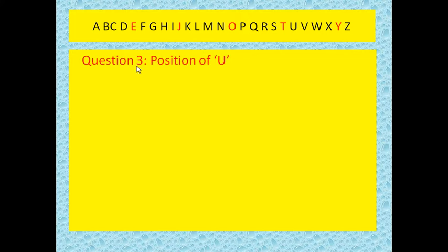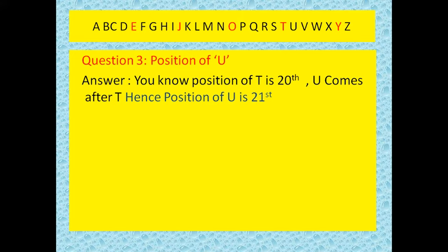Now, examiner may ask to you, what is the position of a particular letter. Here, I will explain by the example of U. So, examiner is asking like, position of U in the English alphabet. So, friends, you are well aware here that position of T is 20th and U comes after T. So, if position of T is 20th, then position of U will be 21st. We did not use any pen.